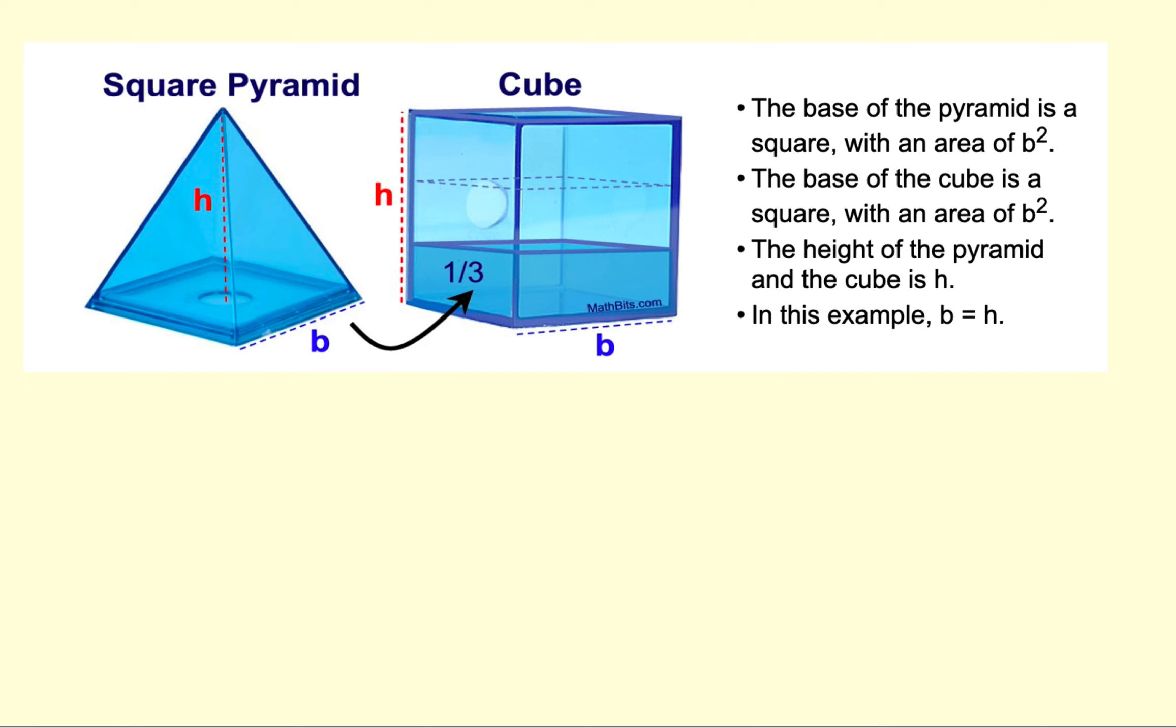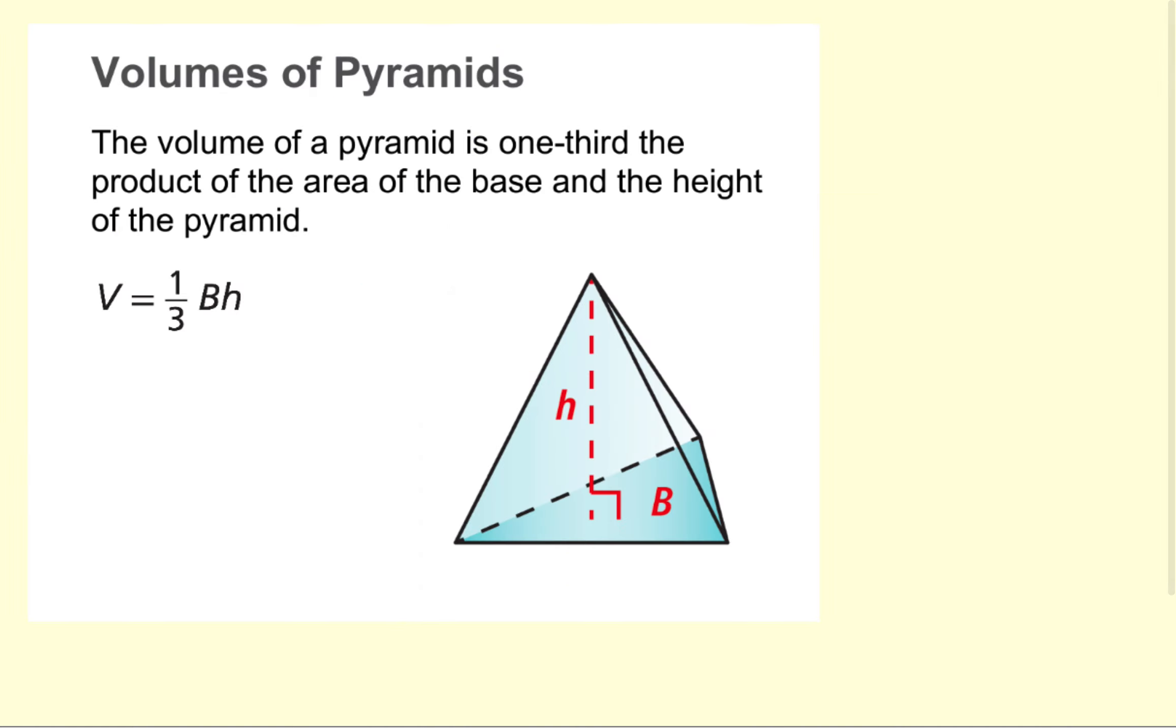For a square pyramid and a cube, when they share the same height and they share the same base, the square pyramid will only fill one-third of the cube. So this is an important relationship that tells us what the volume of a pyramid will be. The volume of a pyramid will be one-third the area of the base times the height, because the area of the base and the height will be the volume of the prism, and we can only fill one-third of the prism.